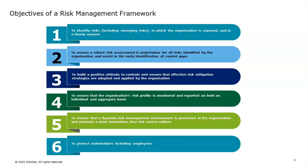Starting with the key objectives of the enterprise risk management framework: it's around identifying, including emerging risks to which the organization is exposed, in a timely manner. Ensuring a robust risk assessment is undertaken for all risks identified. Building a positive attitude to controls to ensure that effective risk mitigation strategies are adopted. Ensuring the organization's risk profile is monitored and reported both at the individual and aggregate basis. And ensuring a dynamic risk management environment that promotes an innovative, less risk-averse culture — and that's where risk appetite comes into play.